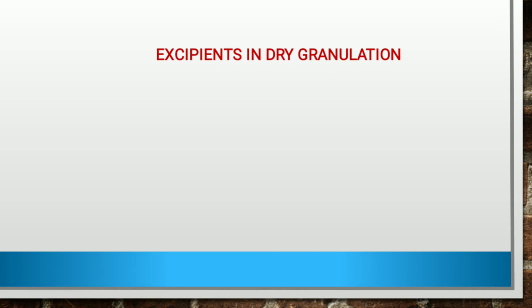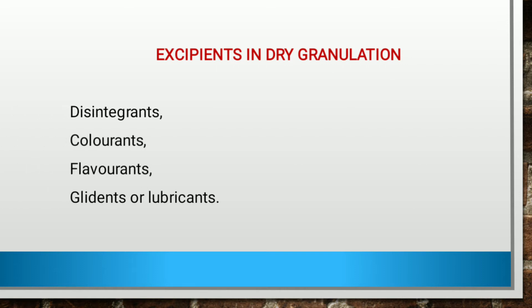The different excipients used in dry granulation include disintegrants, colorants, flavorants, and glidants or lubricants, along with other excipients like fillers, diluents, and dry binders if any.